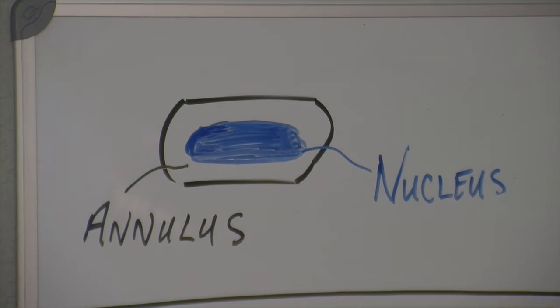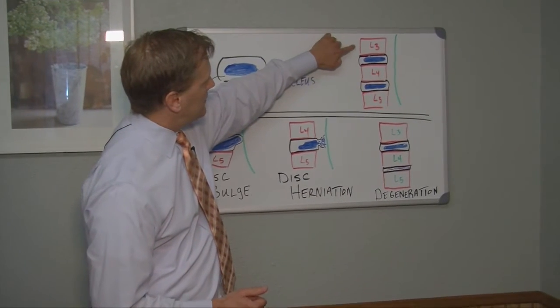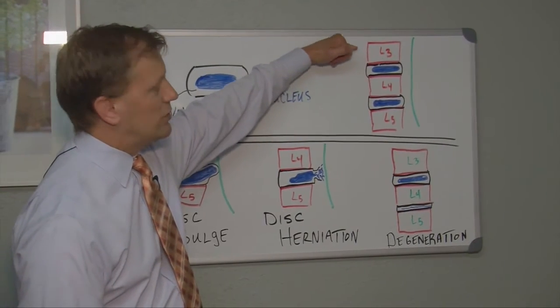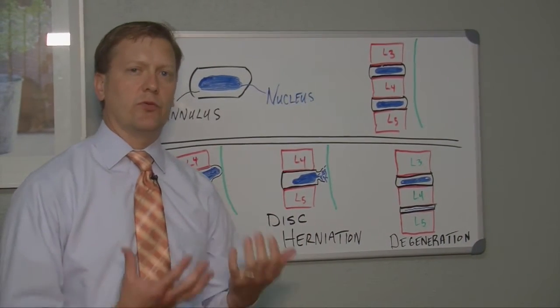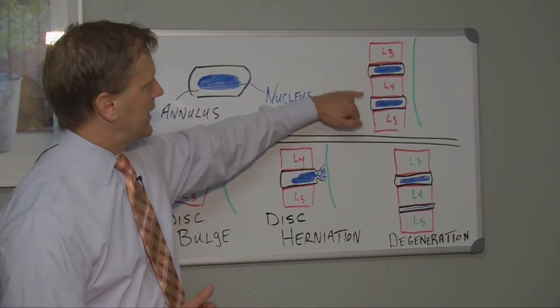The disc sits in between each one of our vertebrae. So here I'm depicting L3, which means the lumbar spine number three vertebra, and then the fourth vertebra and the fifth vertebra. We've got a disc that sits in between each one of those.